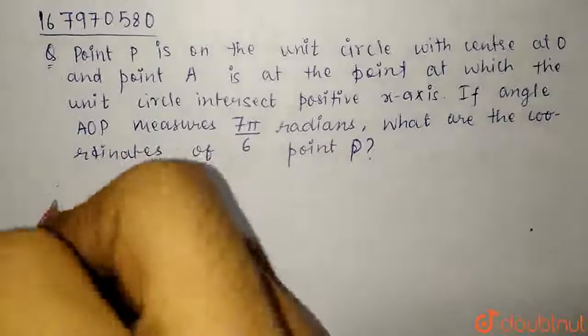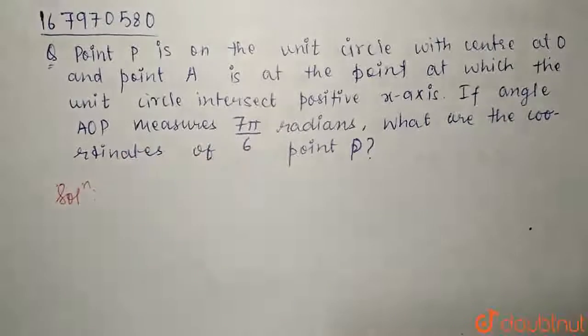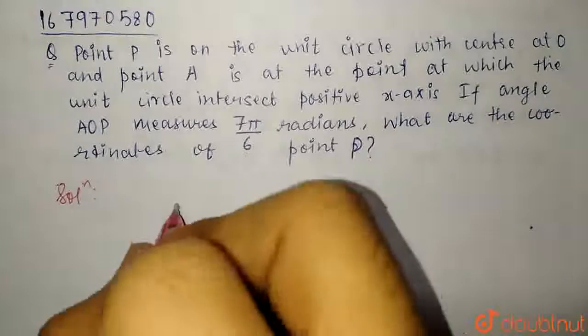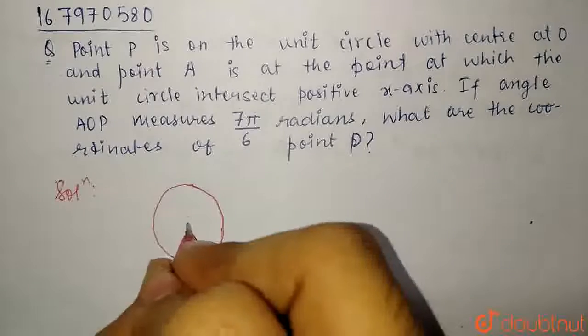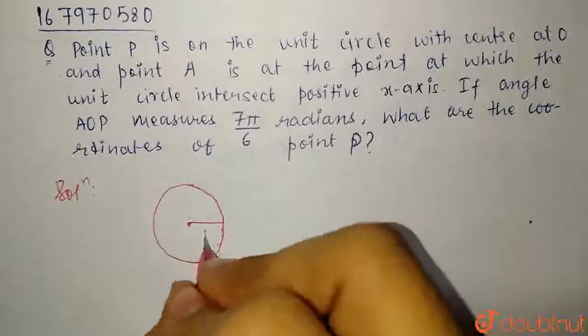The angle is given in radians, so set your calculator to radians. It is given that the circle is a unit circle. What is a unit circle? Unit circle is a circle with radius equal to 1.